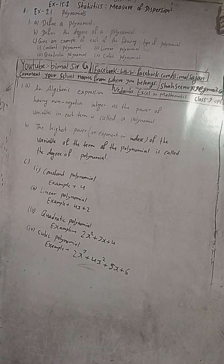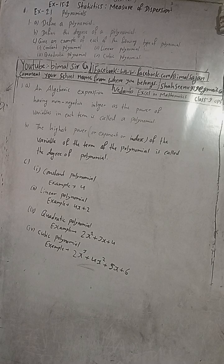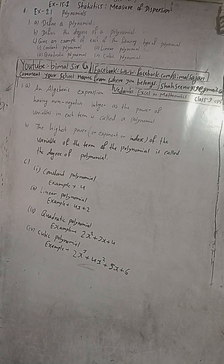For the constant polynomial we wrote 4 — any constant number works, like pi. For linear polynomial 4x plus 2, the power of x is 1, so it is linear. For quadratic, the power must be 2, so x power 2.